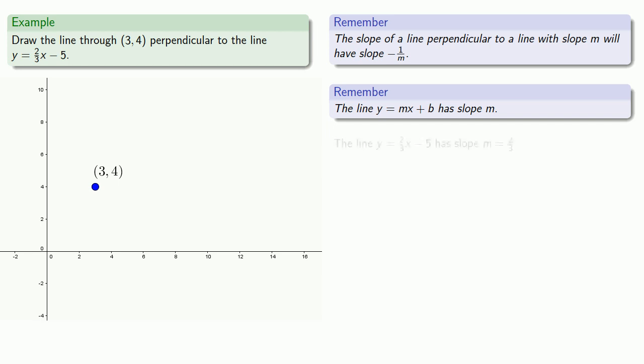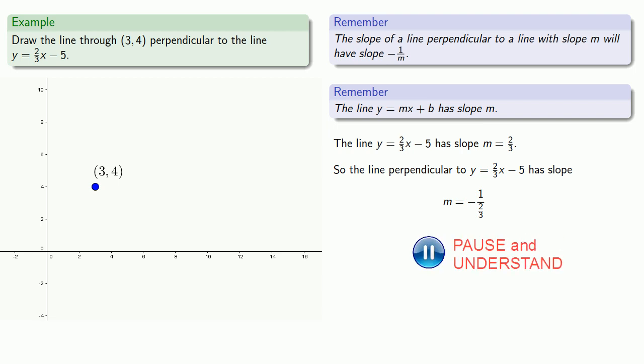And so the line 2 thirds x minus 5 has slope m equal to 2 thirds. So the line perpendicular will have slope m equals minus 1 over 2 thirds, which is equal to minus 3 halves.